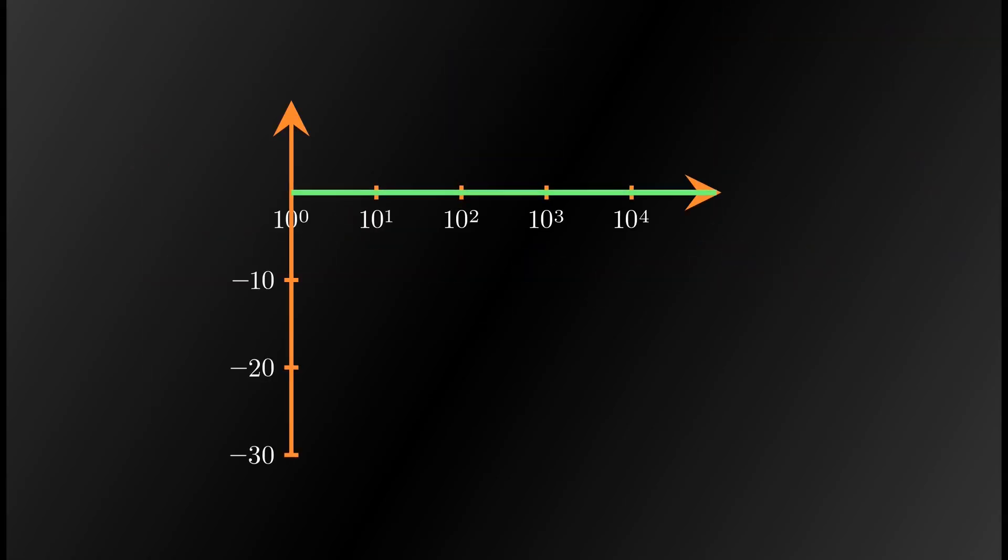We start with a flat frequency response curve. Draw a line at the cutoff frequency, omega c. To the right of the vertical line, the response curve is bent downwards.